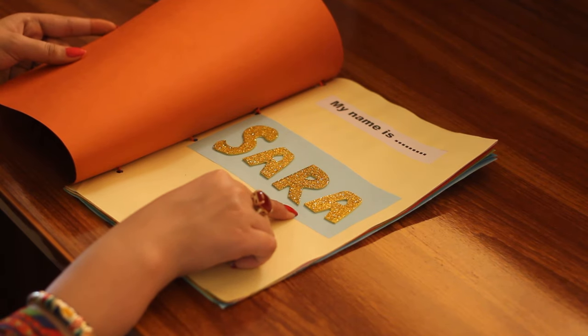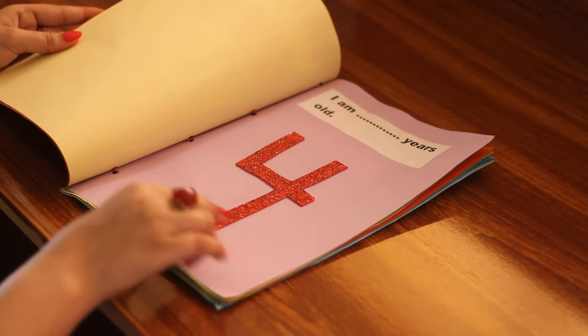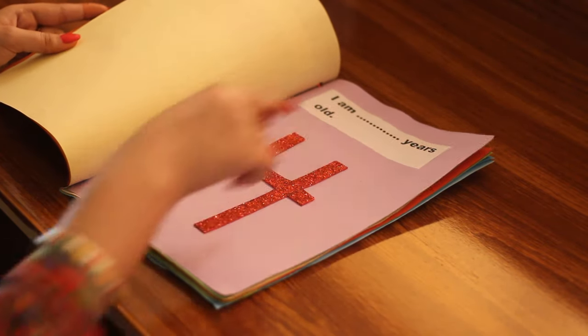For the second page: 'I am four years old.' Here I have again used some formic sheet.